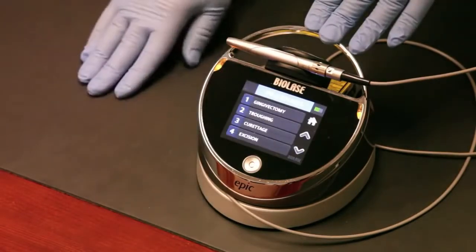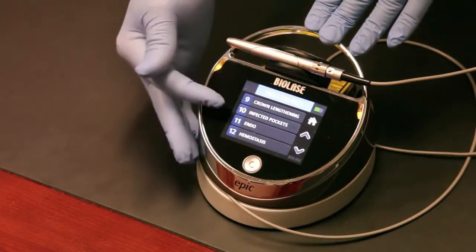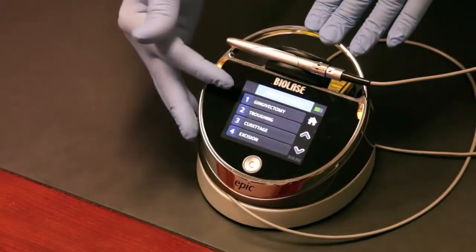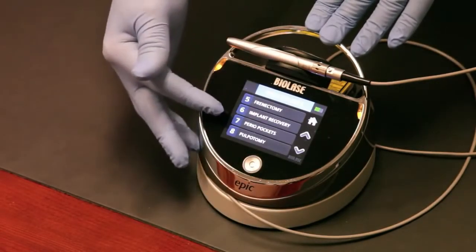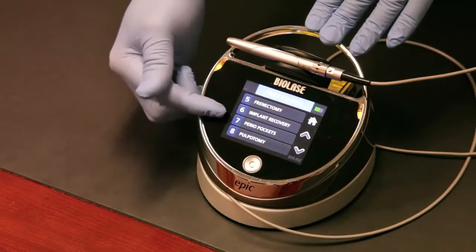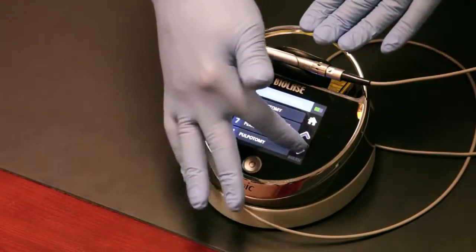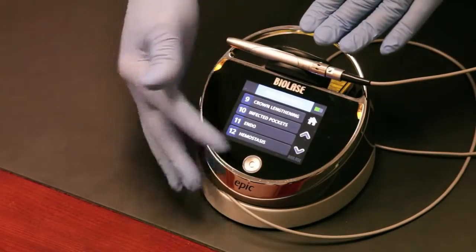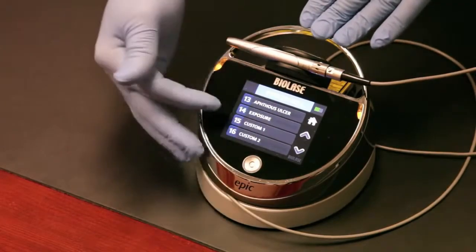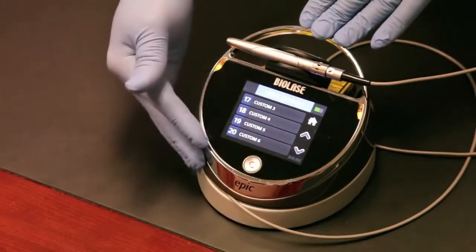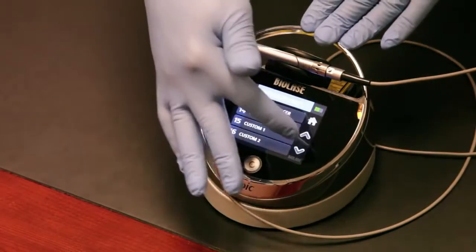You can quickly get into the soft tissue surgery, which is the majority of what you'll use your Epic laser for. You've got 14 presets that are factory loaded for very basic procedures. You can see procedures such as gingivectomy, troughing and curettage, excision, frenectomy, implant recovery, perio pockets which is a beautiful procedure for your hygiene team, crown lengthening, infected pockets, endo, hemostasis. There's a lot of procedures. In addition to the 14 presets, there's spots here for six of your own favorites, so up to 20 presets can be loaded into the Epic.